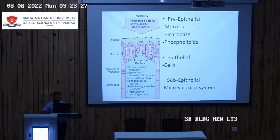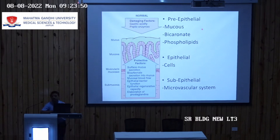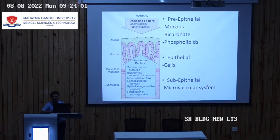The factors that can damage the gastric mucosa are gastric acidity with a very low pH and peptic enzymes. For protection, there are different layers: the pre-epithelial mucus layer full of bicarbonates and phospholipids, the epithelial layer, and the sub-epithelial microvascular system used for clearing excess acidity and foreign materials.